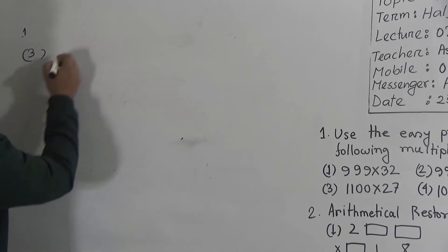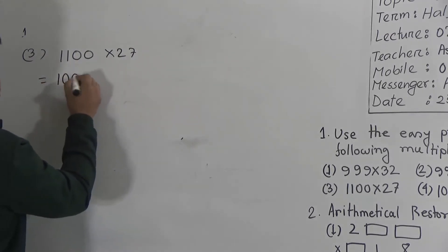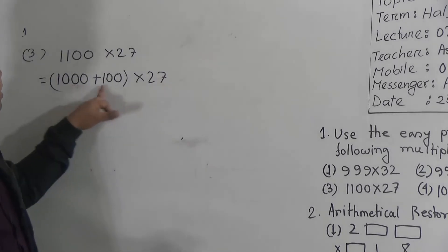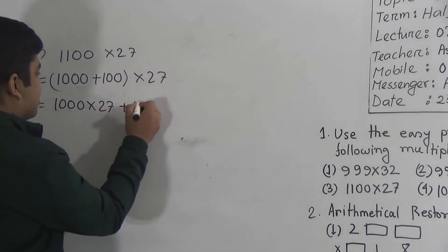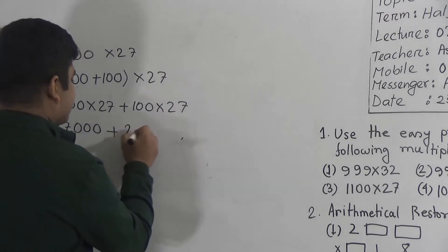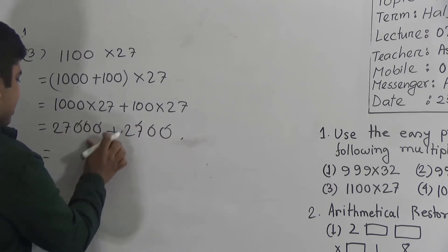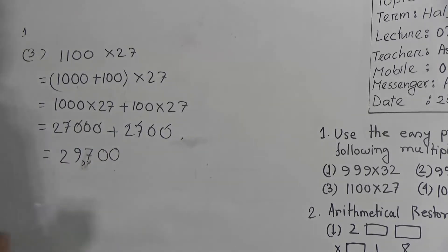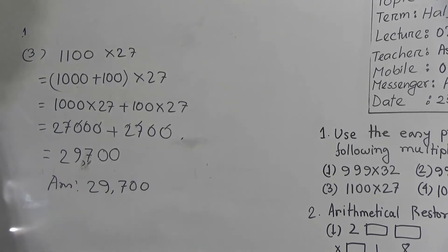Question number 3: 1,100 multiplied by 27. So 1,100 is written as 1,000 plus 100. Multiply by 27. That means 1,000 multiplied by 27 plus 100 multiplied by 27. 27 with 3 zeros gives 27,000, and 27 with 2 zeros gives 2,700. Adding: 0+0=0, 0+0=0, 7+7=... giving 29,700. So 29,700 is the answer. You must write the answer after doing the solution.